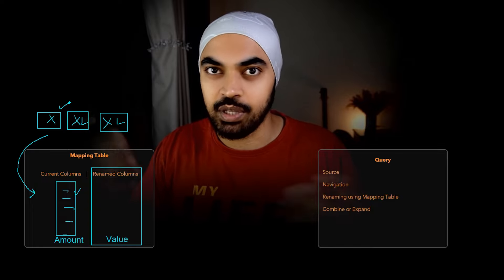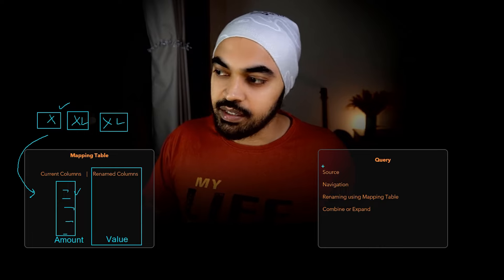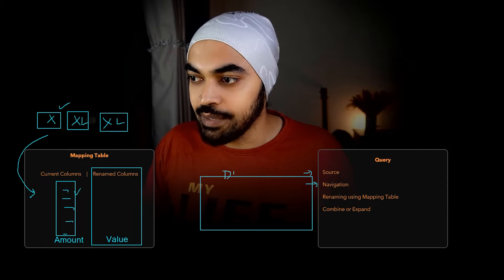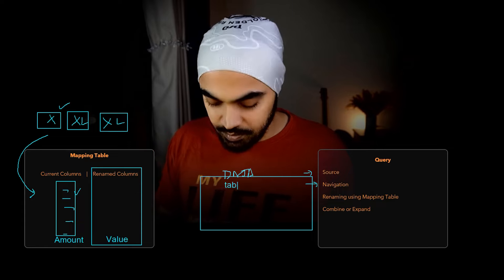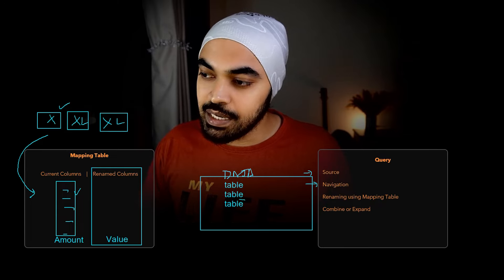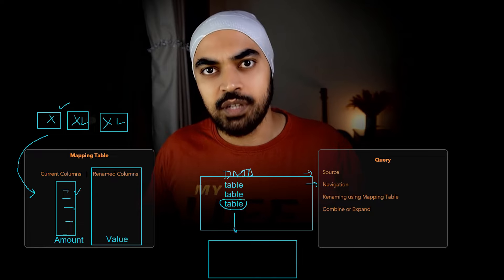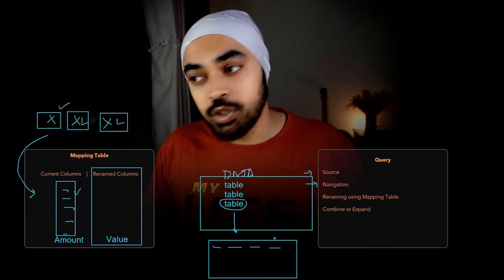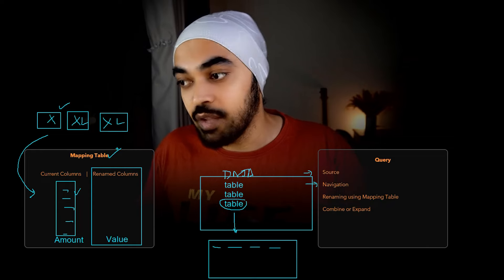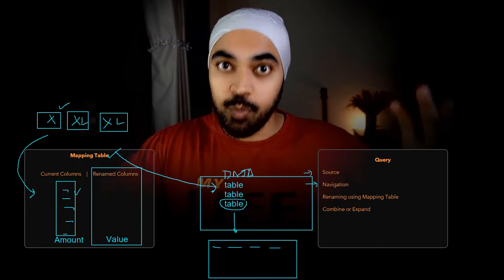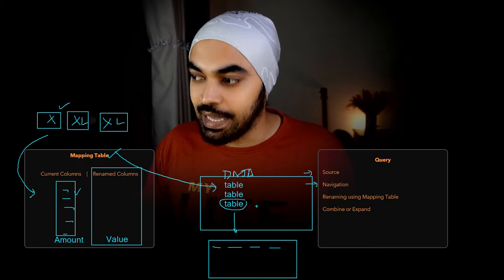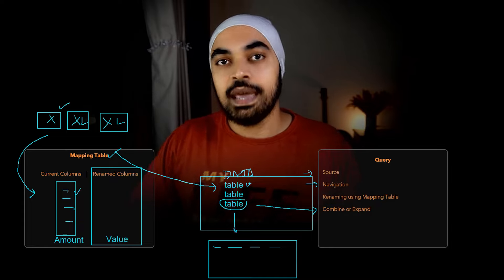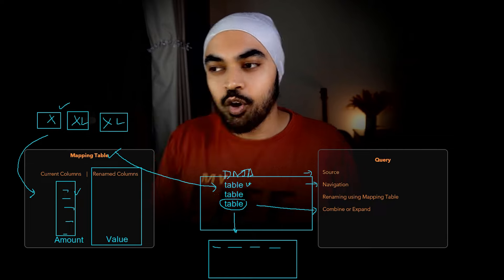Here is a visual picture of how it's going to work. Imagine we are creating a query with steps like source and navigation, and at one point in the query you have a column called 'data' containing nested tables. You can peek into these tables and see the preview at the bottom. The headers of those nested tables will be inconsistent. What we are going to do is use the mapping table to rename the columns of the closed nested tables without opening them, and once the columns have been renamed, we will expand and combine the data in the next step.